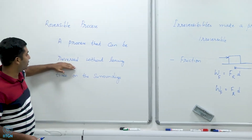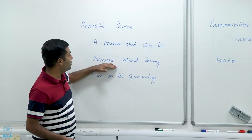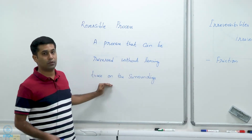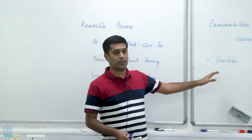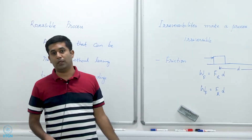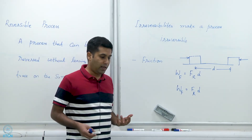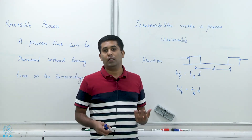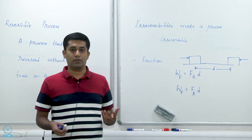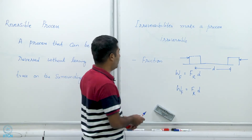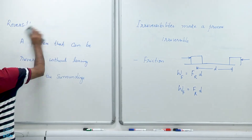This is the key to defining a reversible process: a process that can be reversed is the easy part, but the difficult part is that it needs to be reversed without leaving a trace on the surroundings — and that is what makes it impossible. This is one example of why friction causes irreversibility. Whenever there is friction, there is irreversibility, and some work is irreversibly lost — it cannot be recovered and is lost forever.